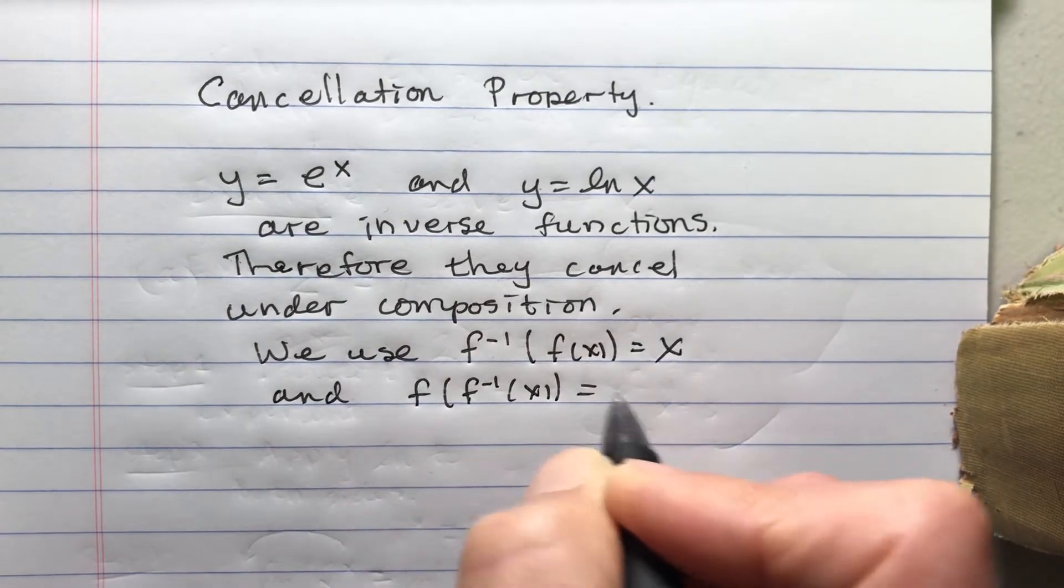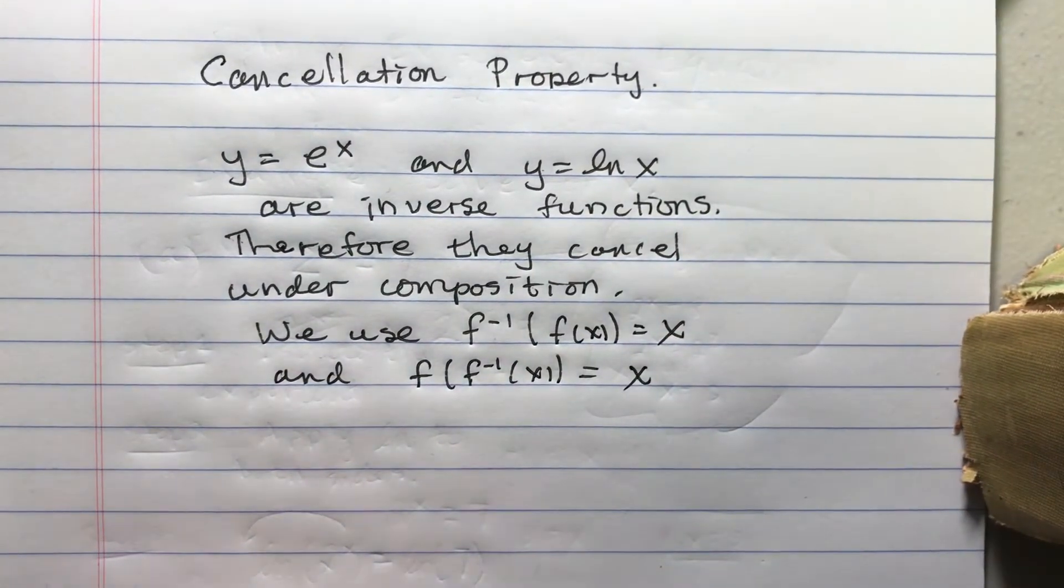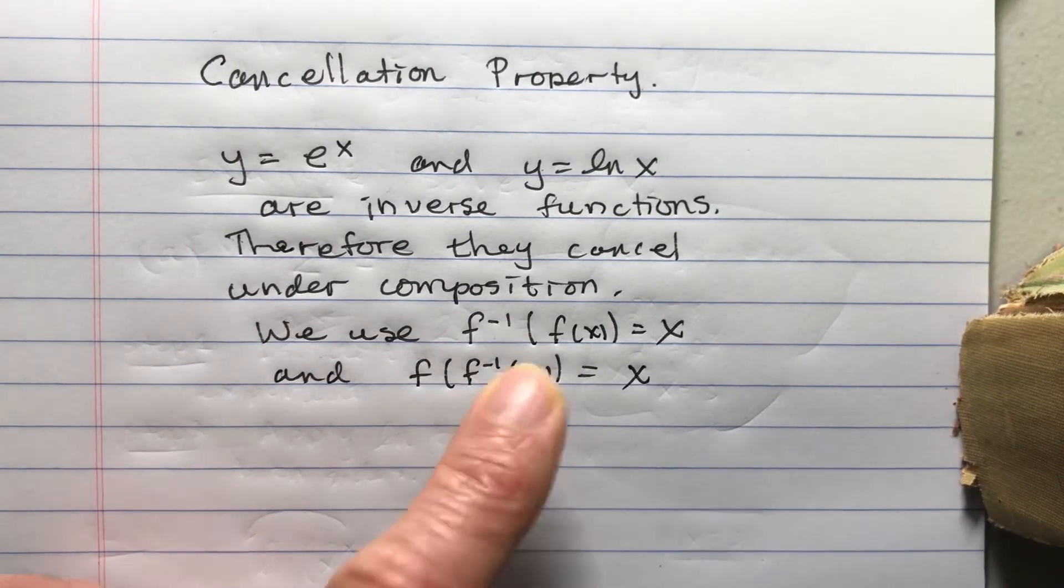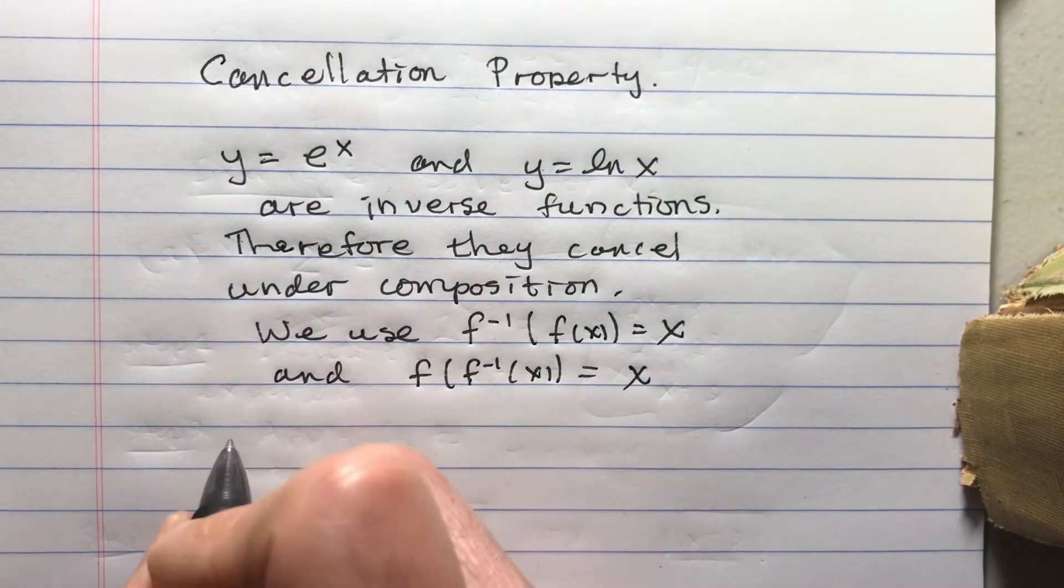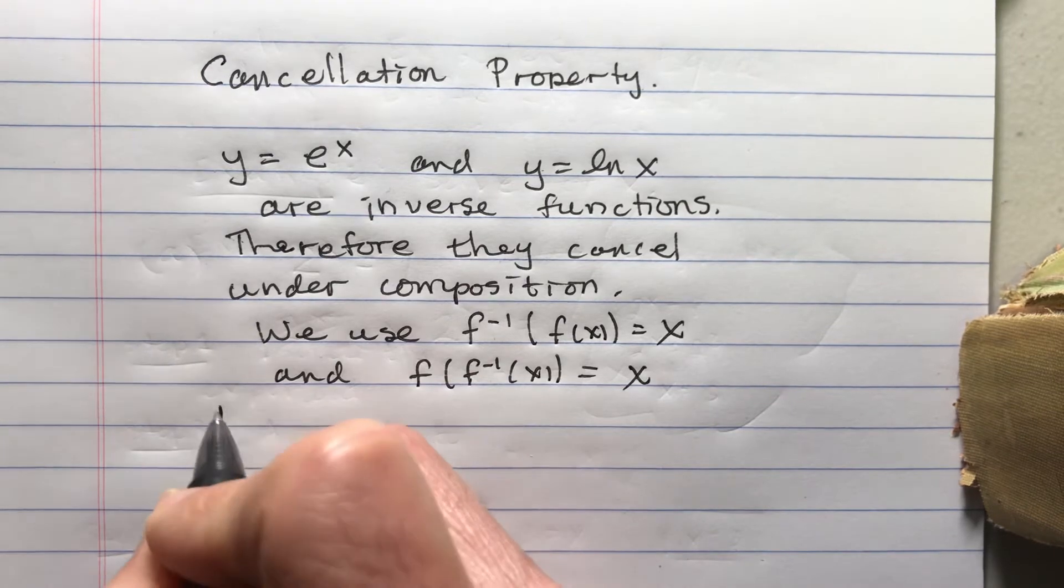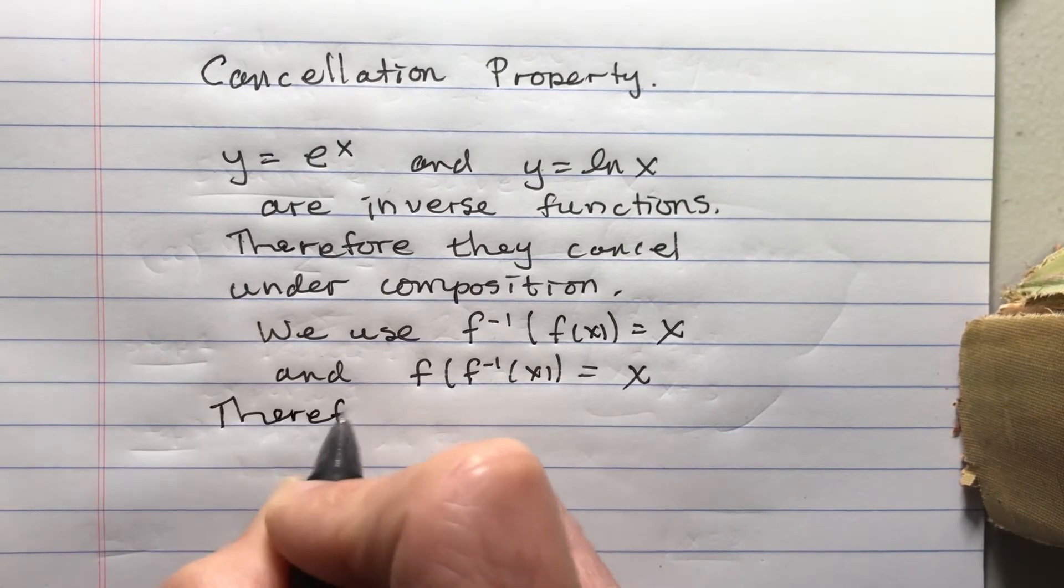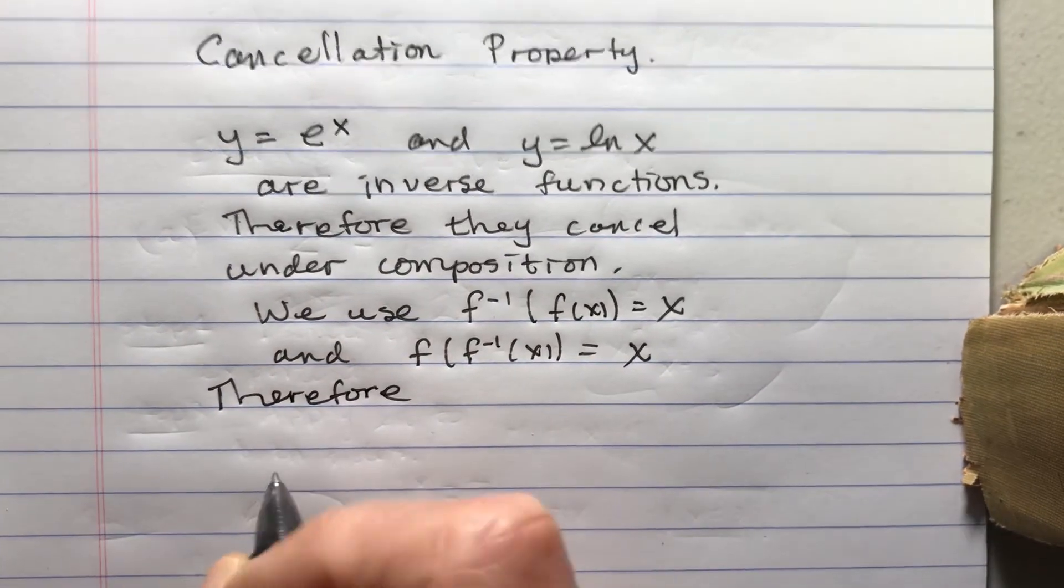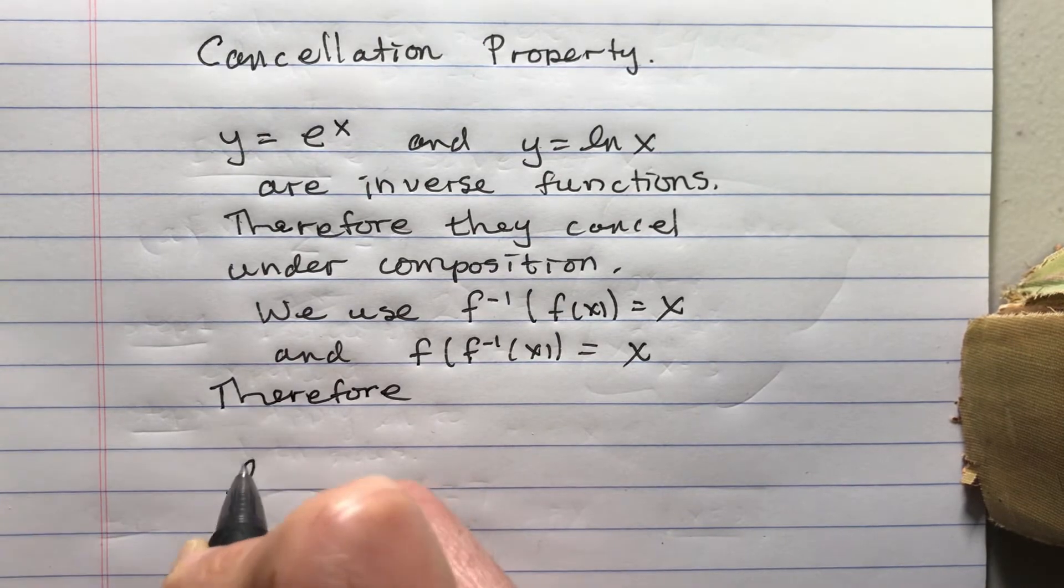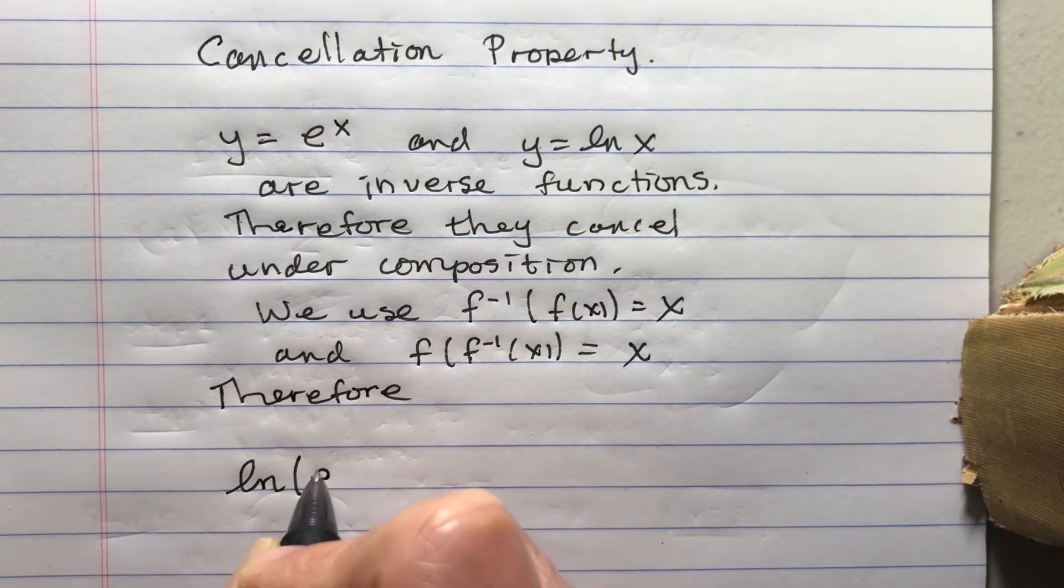Therefore, if I compose these two functions, if I have ln of e to the x, ln and e cancel out. If I have e to the ln x, e and ln cancel out.